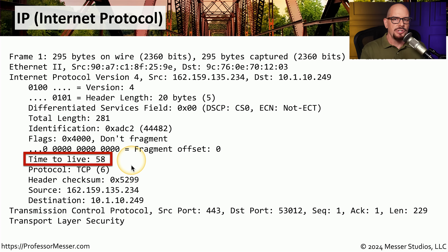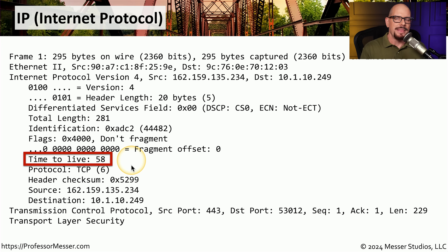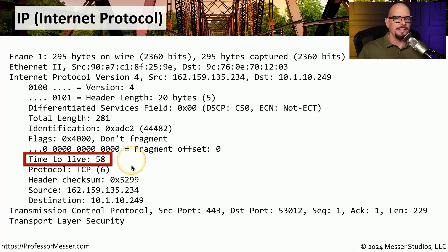In most cases, the total number of hops between us and a destination somewhere on the internet is usually around 12 to 16 hops — sometimes more, sometimes less. That's a relatively small number when you consider that the total default TTL on macOS or Linux is 64 hops and on Windows is 128 hops. That gives us plenty of room to get data from one side of the internet to the other without that information accidentally being dropped by a router.